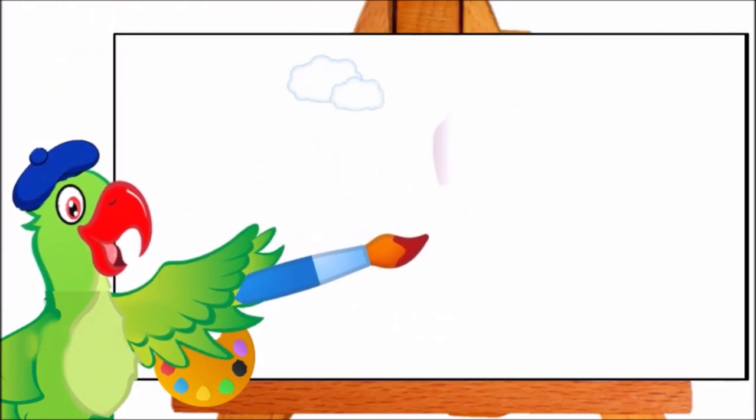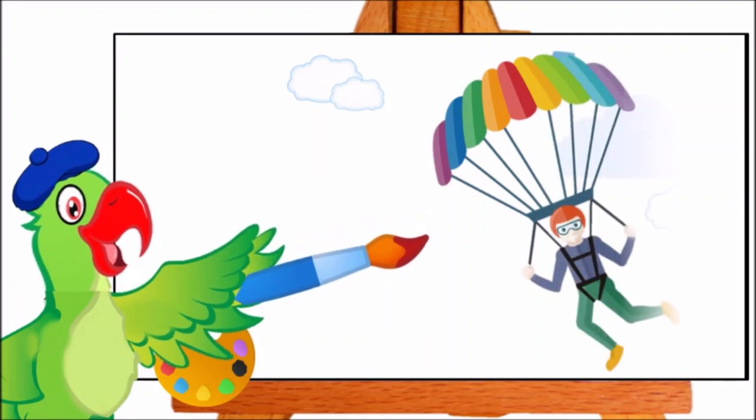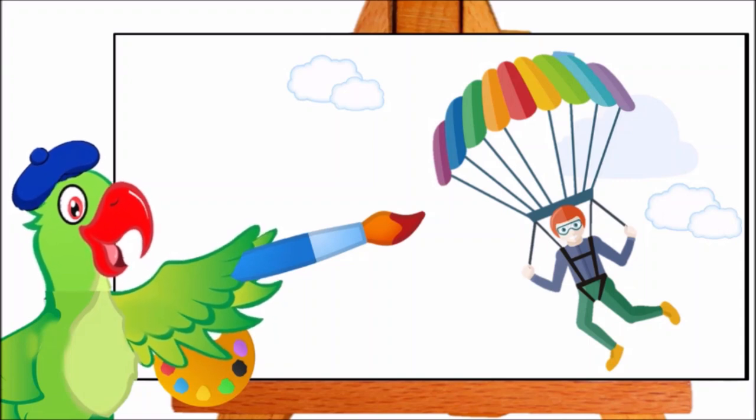Now I am painting something else. Can you tell me children, what is he using to fly? Very good. This man is using a parachute to fly. P-per parachute.